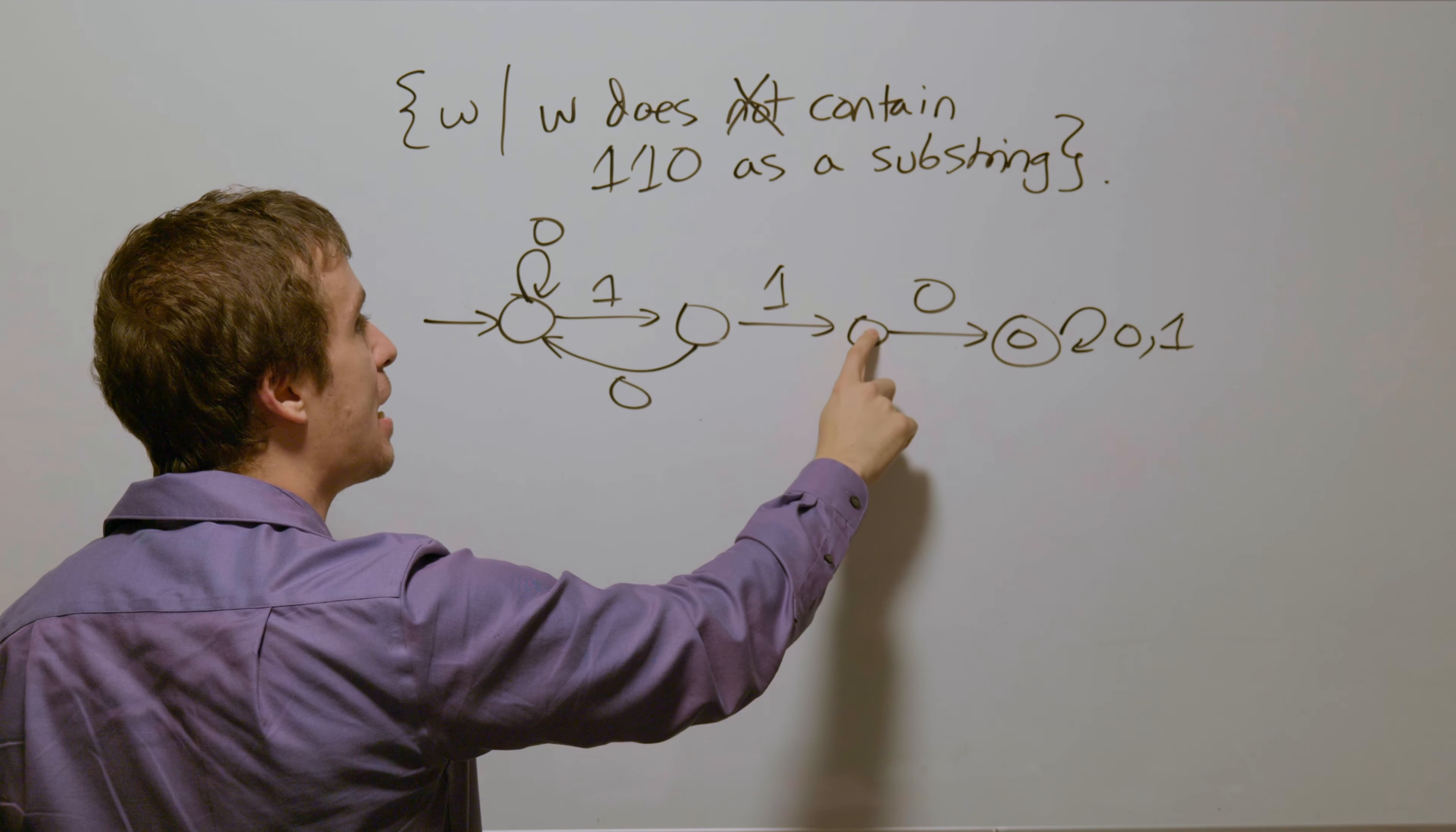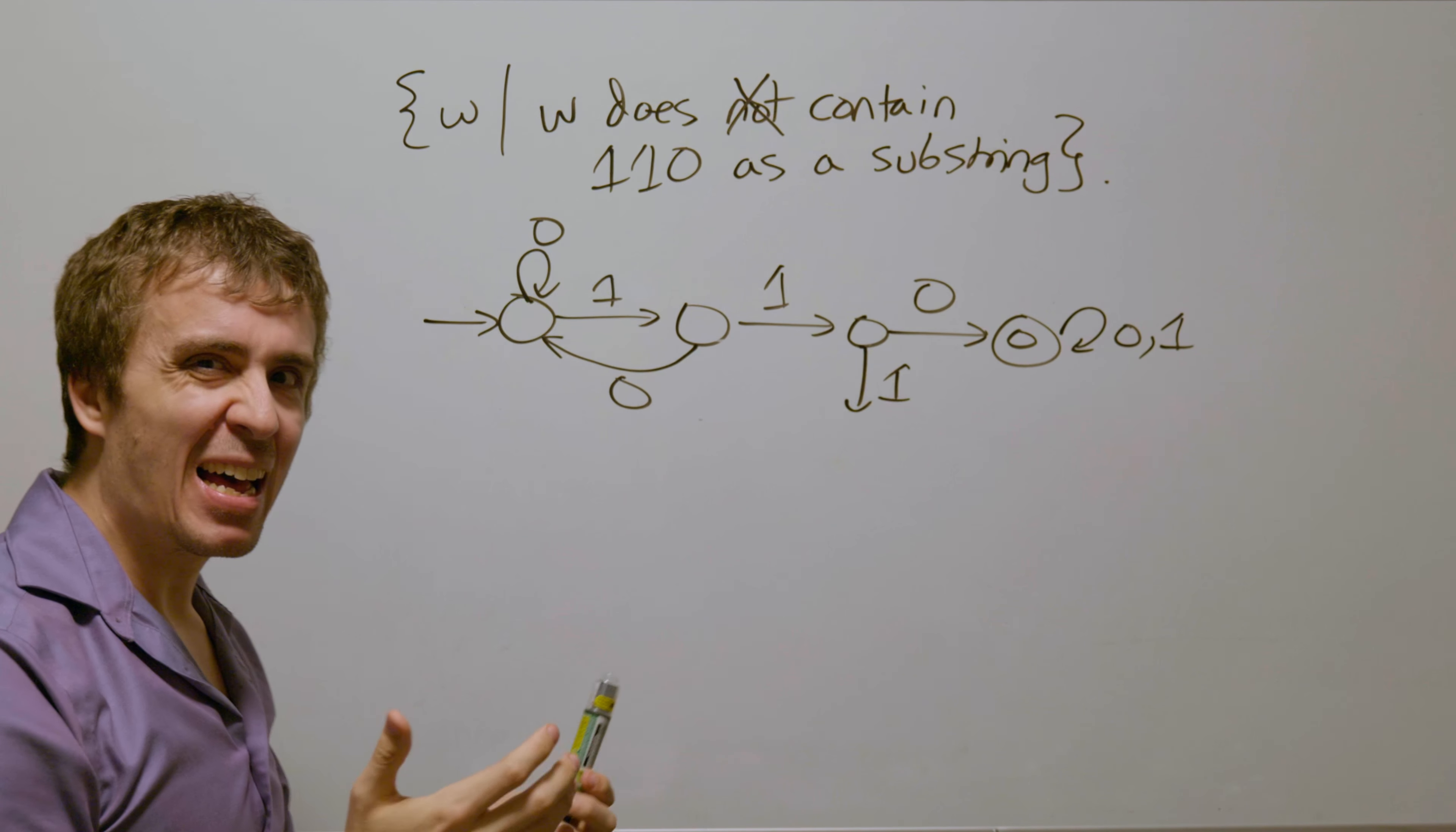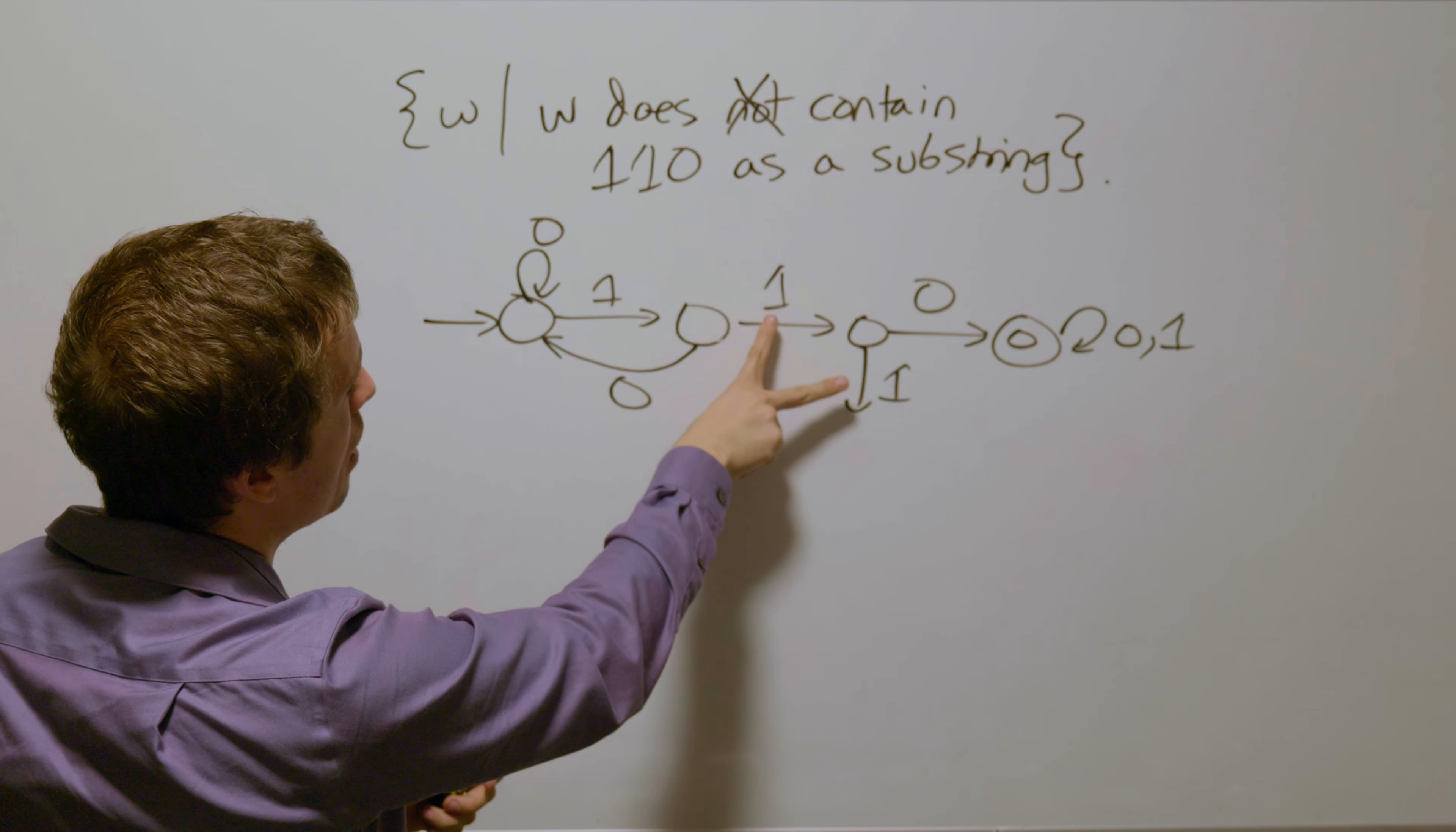If we read a 1 here, then that means that we have read one 1 and then now another 1. So it kind of destroyed some of the work we did, not a lot though. And so the last two things that we have read are 1 and 1.